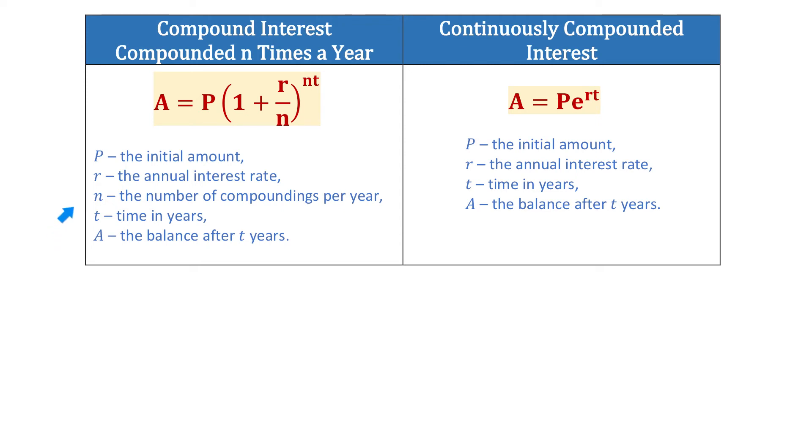Now, what if the number of compounding periods increases infinitely? Then, to calculate the balance, we use the formula for continuously compounded interest. This formula is A equals P times e to the rt.